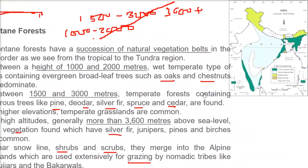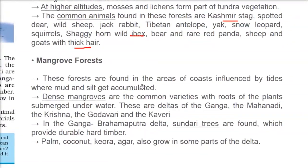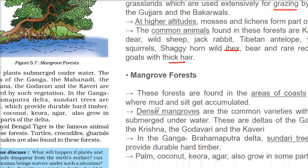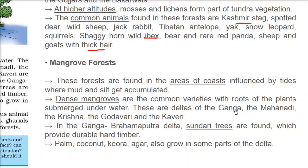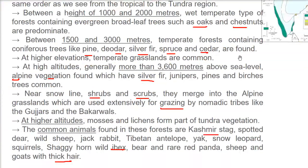Mangrove forests are found in coastal areas influenced by tides, where mud and silt accumulate. Dense mangroves have roots submerged underwater. These are found in the deltas of Ganga, Mahanadi, Krishna, Godavari, and Kaveri rivers.